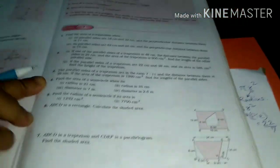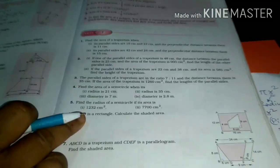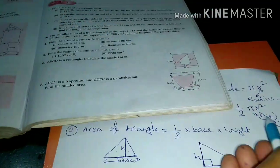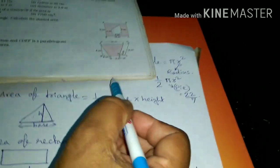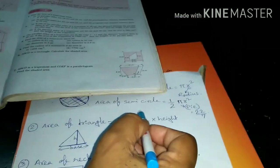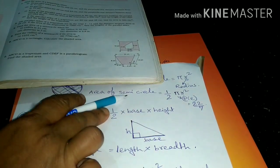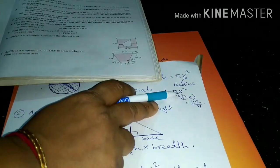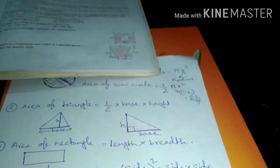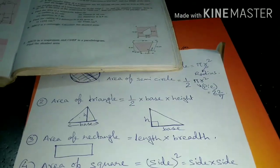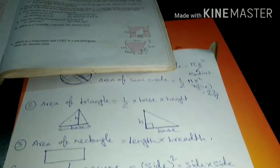Question number five: find the radius. Here the area is given, so you can find the value of r. Substitute the area into the formula and solve for r. You can complete up to question number five this way. Thank you.